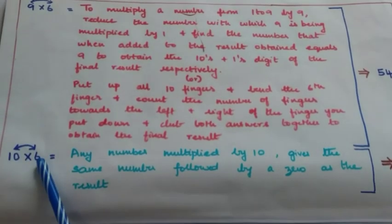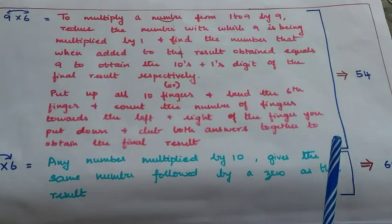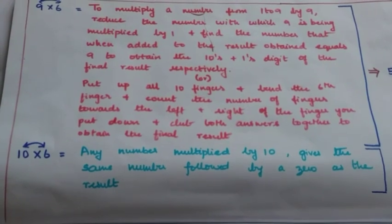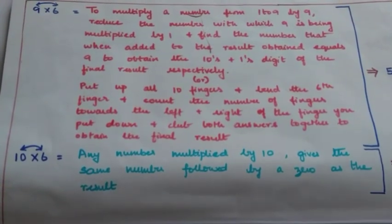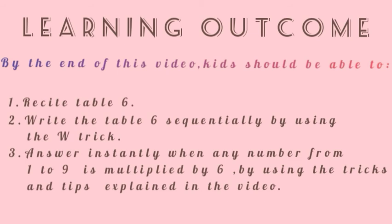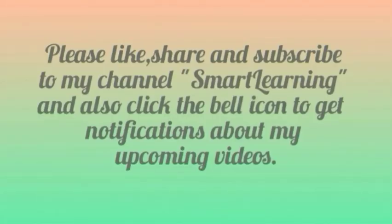I hope this video has been helpful for kids to memorize table 6, since I have explained each row in detail with the trick to remember it. By the end of this video, kids should be able to recite table 6, write it sequentially using the W trick, and answer instantly when any number from 1 to 9 is multiplied by 6. If you found something useful, please like, share and subscribe to my channel Smart Learning, and click the bell icon for notifications about upcoming videos.